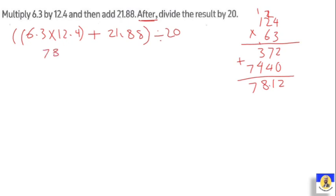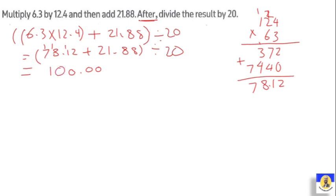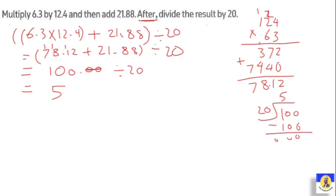So 78.12 plus 21.88: 2 plus 8 is 10, carry 1; 2 plus 8 is 10, carry 1; decimal point; 9 plus 1 is 10, carry 1; 8 plus 2 is 10. That gives 100. Then 100 divided by 20 — cancel zeros — equals 10 divided by 2 equals 5. The final answer is 5.